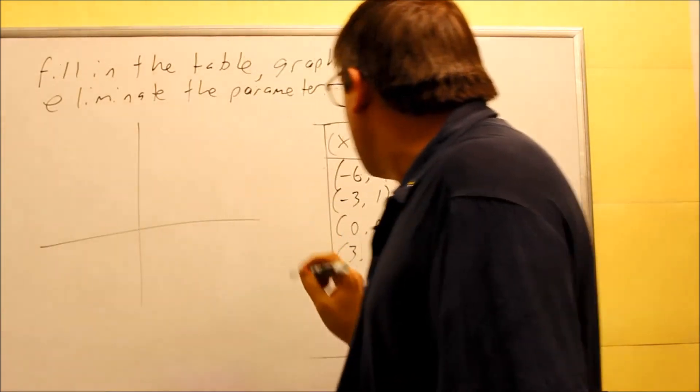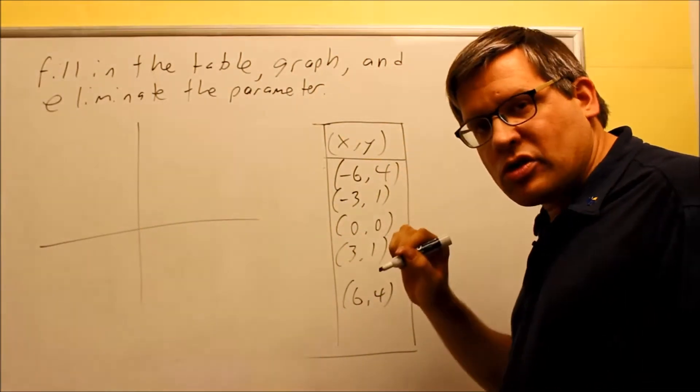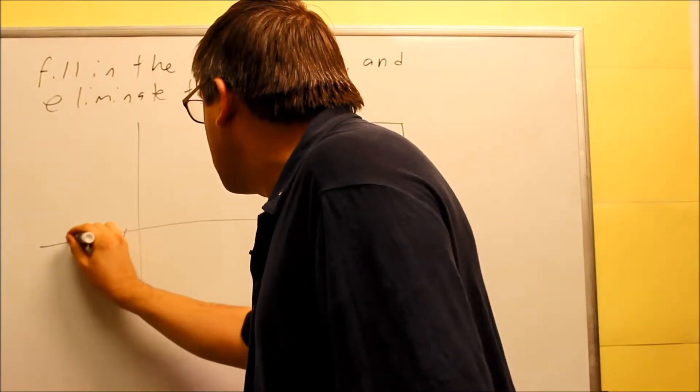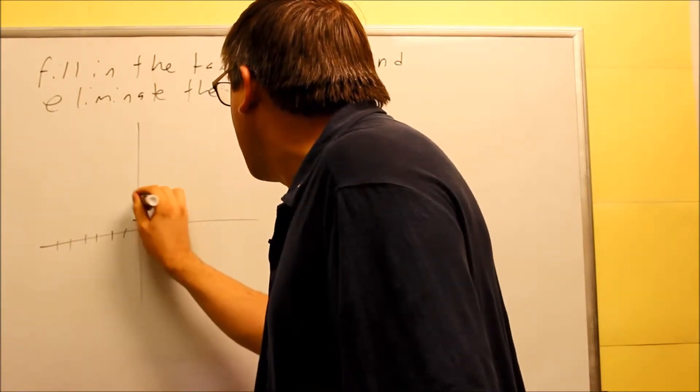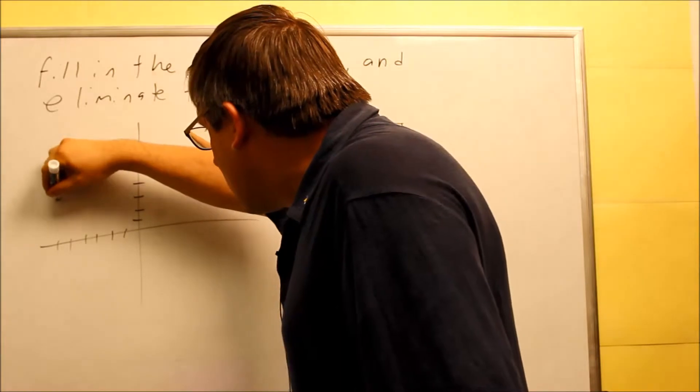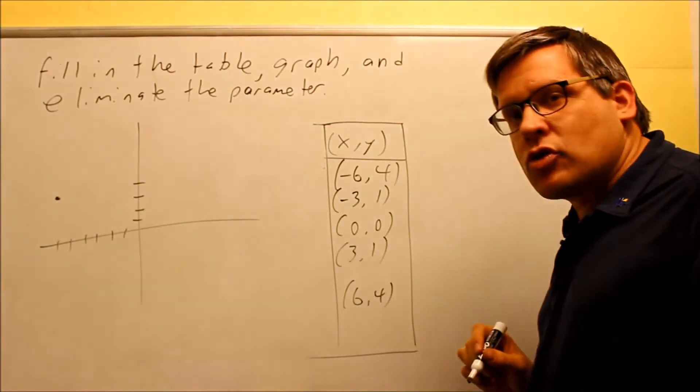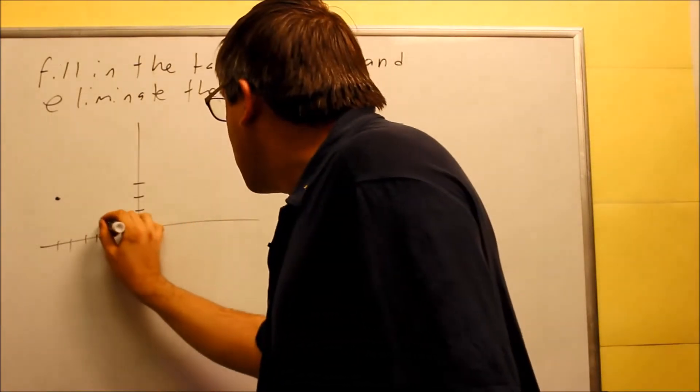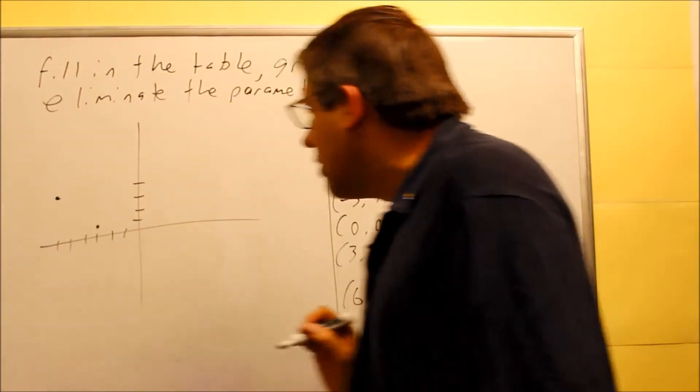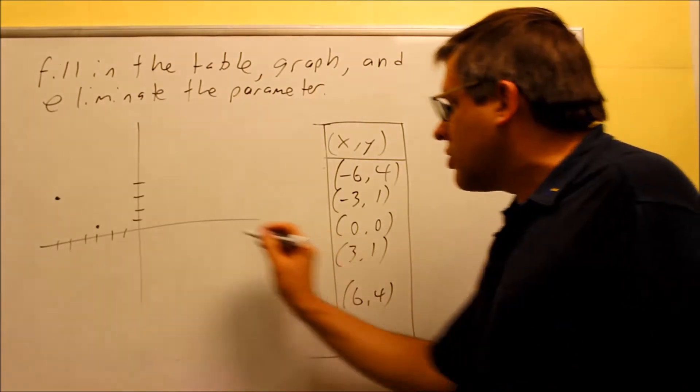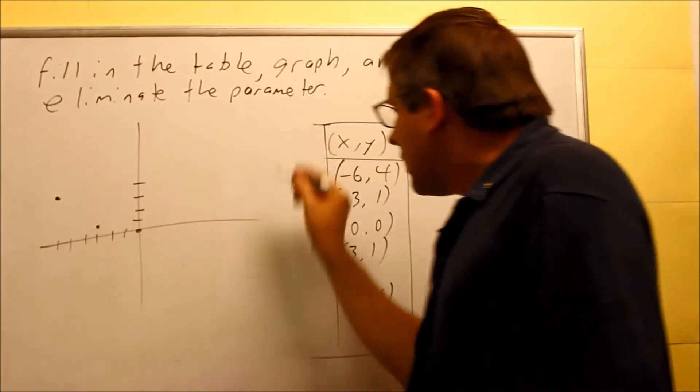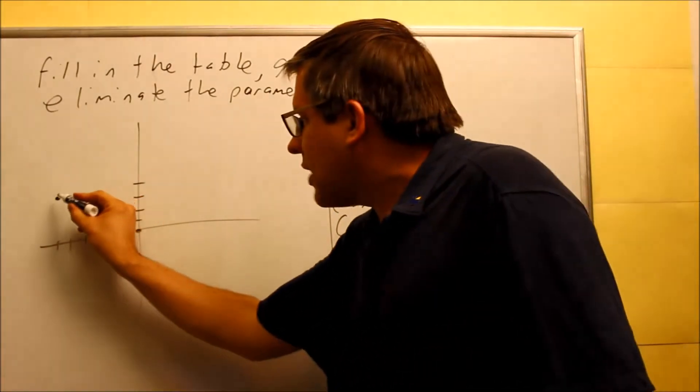And we're just going to go ahead and plot these points right here. So when we plot that one, we're going to keep in mind again where we're starting from and where the point is moving to. Negative 6 and positive 4 would be right here. That's the very first point. It starts there. Then it moves to negative 3, 1. Negative 3 and positive 1 is here. Next, we have 0, 0. That's this one. So we can see that the point is basically moving in this direction.